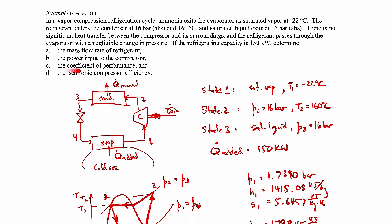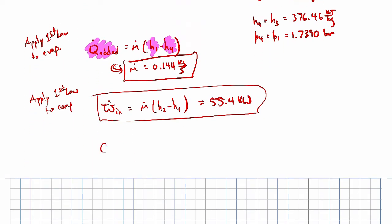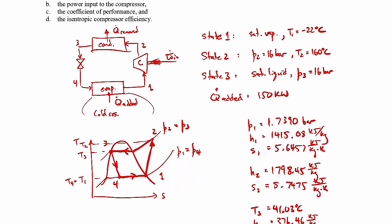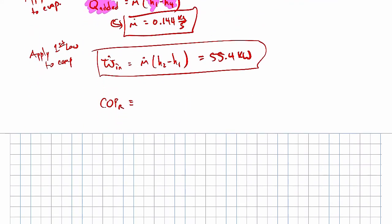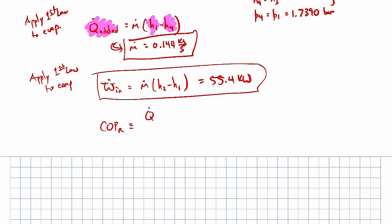For part C, we determine the coefficient of performance for this refrigeration cycle. The COP is defined as Q̇_added divided by Ẇ_in — we want as much heat absorbed from the cold reservoir as possible for as little power input. We were given Q̇_added and just evaluated Ẇ_in, so plugging in those numbers gives a COP of 2.71.